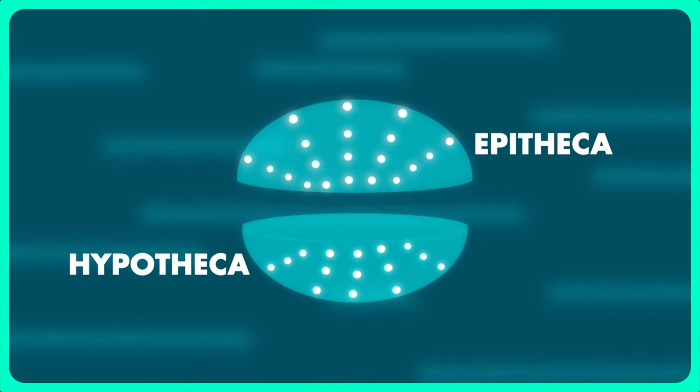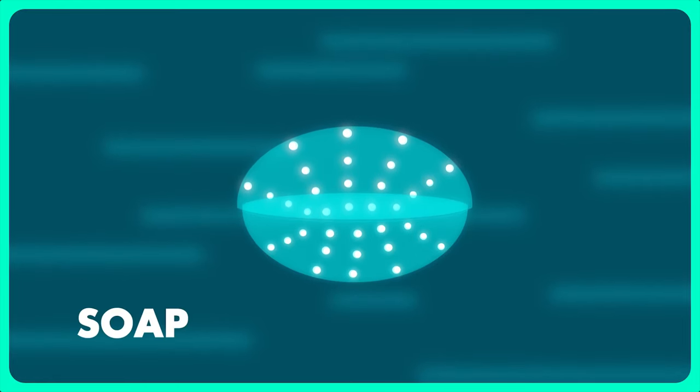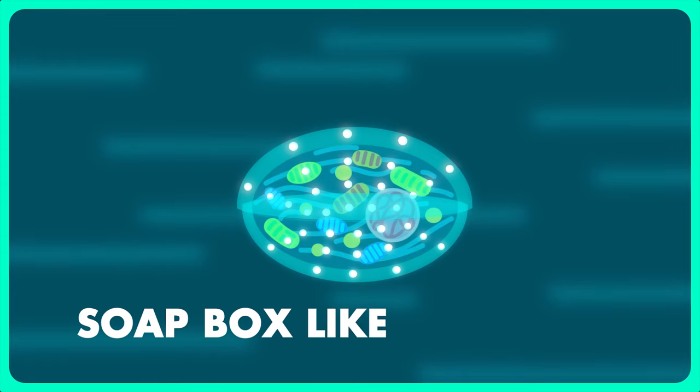However the frustule is not a continuous shell but is made up of two halves joined together. The slightly larger upper half is called epitheca and the slightly smaller lower half is called hypotheca. And joining of these two parts gives a soapbox-like appearance to the diatoms.